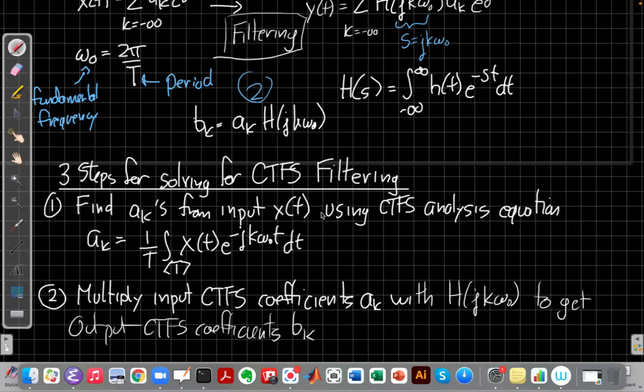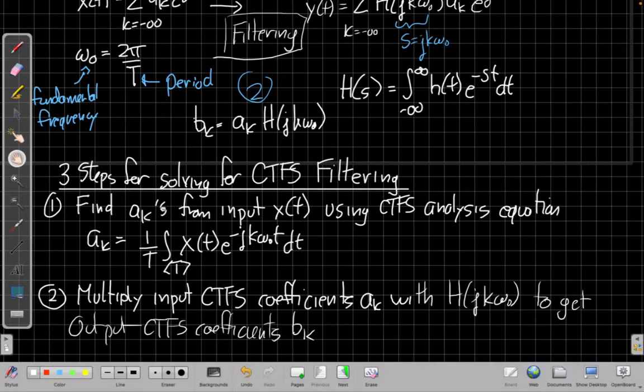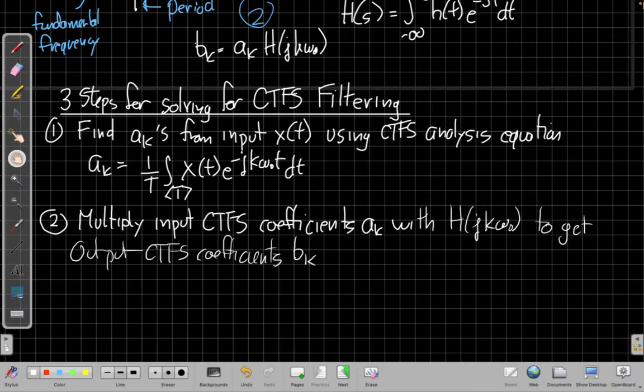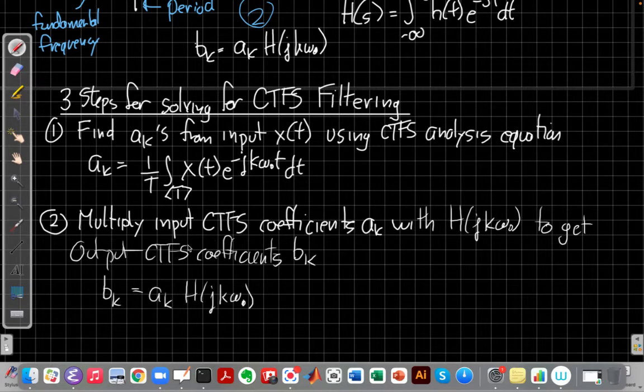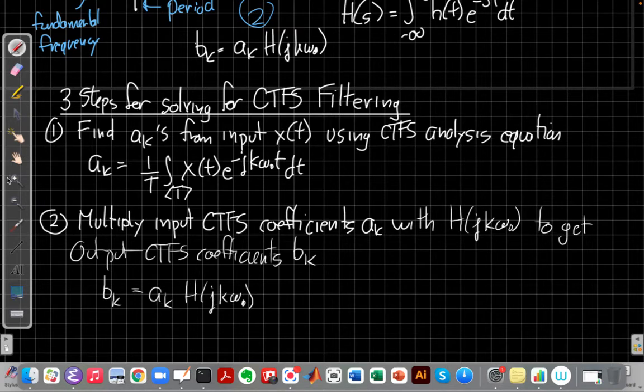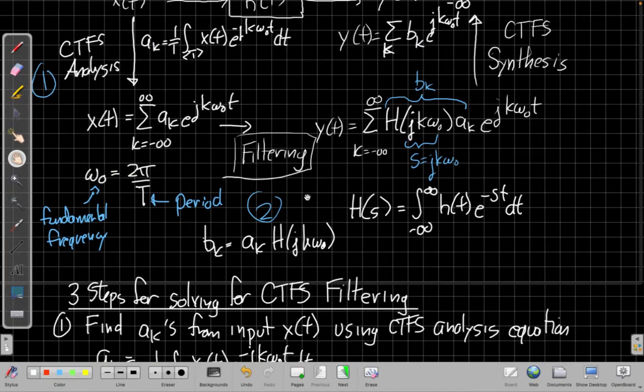So we're multiplying those coefficients a_k with the frequency response h(j k omega_0), same k in both, to get the output continuous time Fourier series coefficients b_k, which is, if we put that just in equation form. Right, the b_k is a_k times h, or a_k times h(j k omega_0). So that's the second step from our roadmap up here.